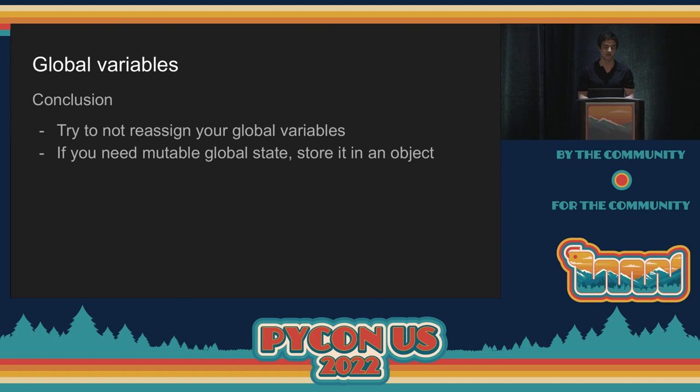I wouldn't take these numbers too literally — this table will evolve rapidly as the faster CPython people may have ideas. But the general conclusion that the no-reassignments case will almost always be faster will hold over time. The simple tip: try not to reassign your global variables. If you're considering performance, assigning to global variables will slow things down. If you still want global mutable state, store it within an object as an attribute, or within a dictionary.